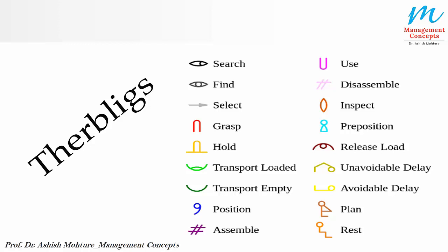For this, a separate video has been made which explains what each motion means — what 'search' means, what 'find' means, the symbols for each, examples for each, and how each motion differs from the others. A link is provided in the description box — click that link to view detailed information about therbligs.